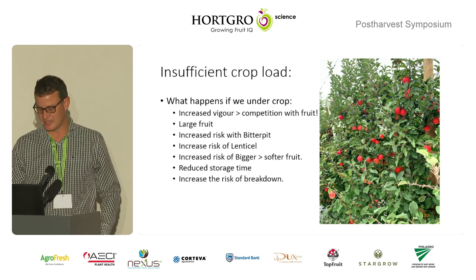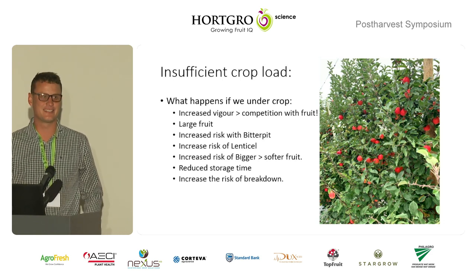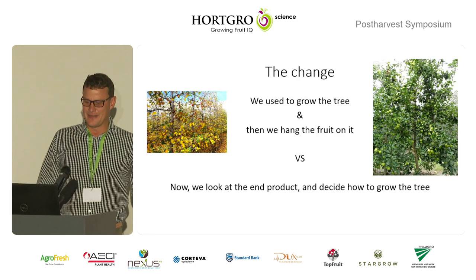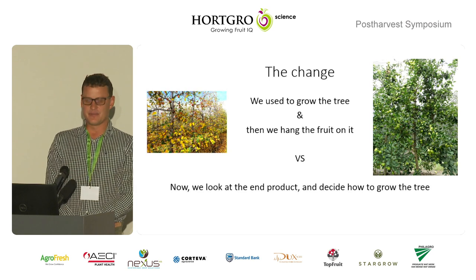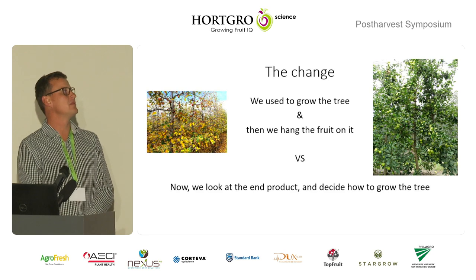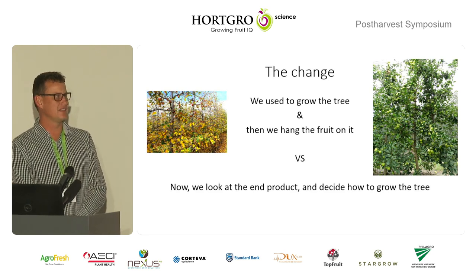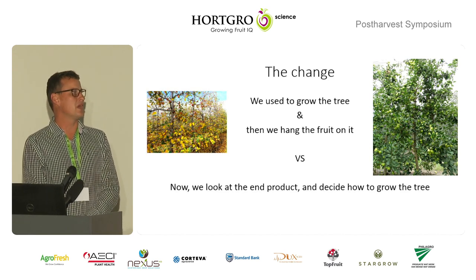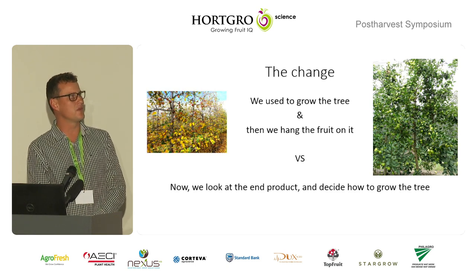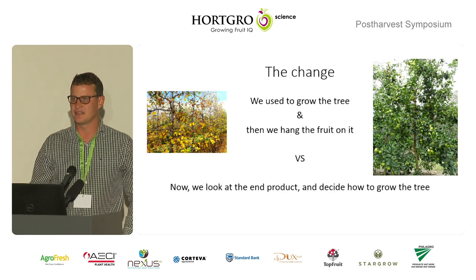Not that there don't happen some issues in post-harvest — I don't want to exclude that completely. It sometimes gets difficult. But I think the real change that we should make is in terms of what we produce. We used to grow trees and then hang fruit on them. The change we need to make is to ask: what's the end product that we want to produce? And then we grow the tree according to that, and put the fruit in the correct positions — not the other way around.